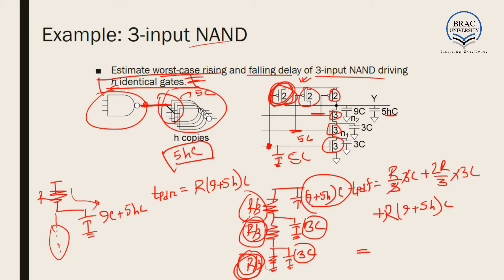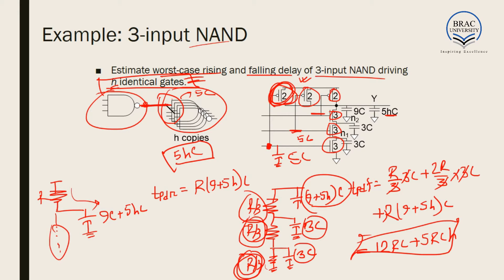Working out the Elmore delay terms: the first gives RC, the second gives 2RC, and the third gives 9RC + 5RCH. So total falling delay is 12RC + 5RCH. This is the total falling delay for the worst-case scenario, and R·(9+5H)·C is the rising delay for the worst-case scenario, both using the Elmore delay model.